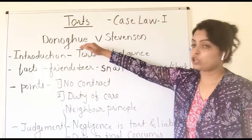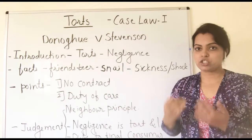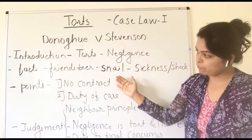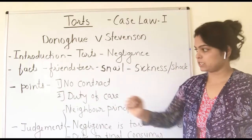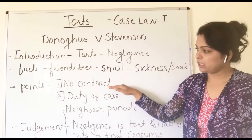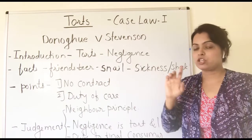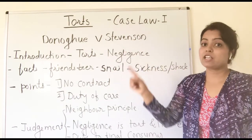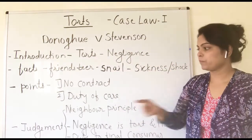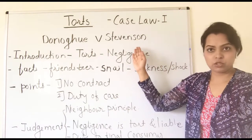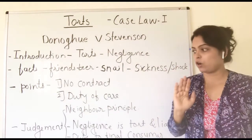One important point: Donoghue's friend purchased the beer from a shopkeeper, so Donoghue did not directly purchase the beer bottle. These are the facts of the case. The law points involved are: number one, whether there is any contract between Donoghue and Stevenson — there is no contract because Donoghue didn't purchase the bottle directly from the manufacturer. Number two, whether Mr. Stevenson has any duty of care towards Donoghue. These two important points were involved.